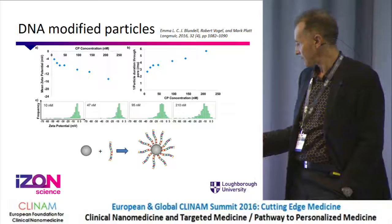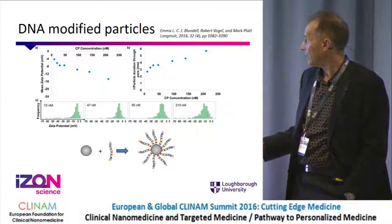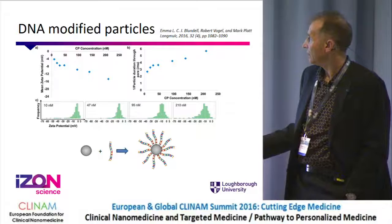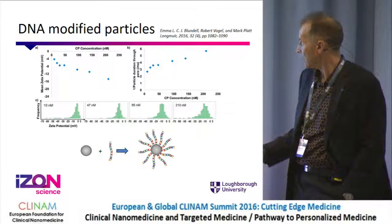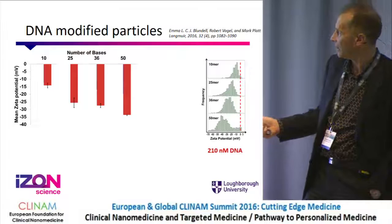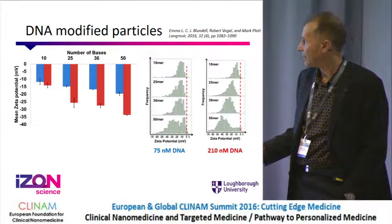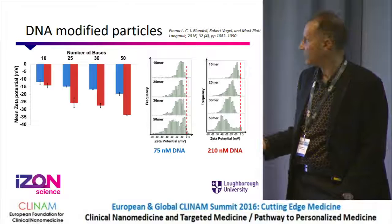This is some work done with DNA-modified particles, working towards the 'lab on a particle' concept, done at Loughborough as part of a PhD project by Emma Blundell. They're adding single-strand DNA to particles. You can see that different amounts of DNA cause different zeta potential of particles and different translocation times through the hole. These are quite small bits of DNA — they analyzed 10, 25, 36, and 50 bases — and you can tell the difference between them in terms of zeta potential. They can also change the molarity and detect that.